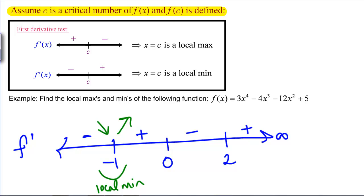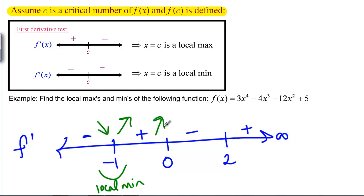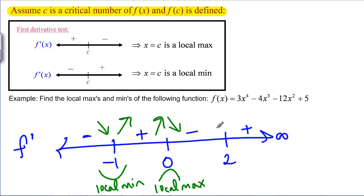Similarly, at zero, to the left F-prime is positive and to the right F-prime is negative, so we're going uphill and then downhill — meaning our function is a local max at x equals 0. At x equals 2, we're going downhill and then uphill, so there we again have a local min.